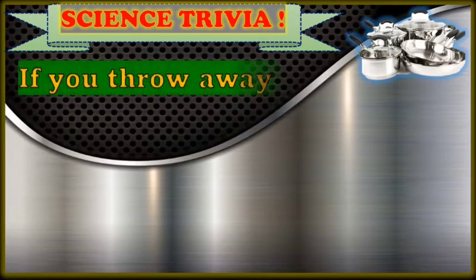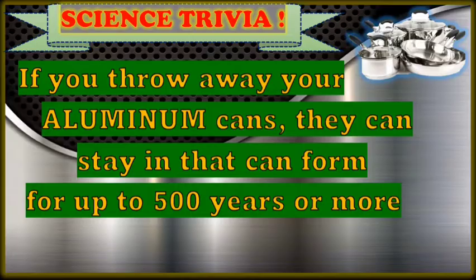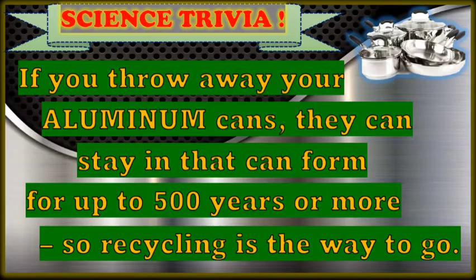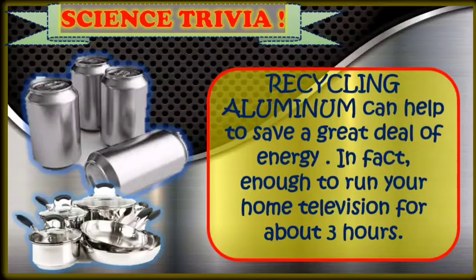We have a science trivia here. Did you know that if you throw away your aluminum cans, they can stay in that can form for up to 500 years or more? So recycling is the way to go. That means, class, we should not just throw away our broken aluminum items at home. Make a way to recycle them and use your creativity to make aluminum into a useful product. Recycling aluminum can help save a great deal of energy — in fact, it's enough to run your home television for about 3 hours.